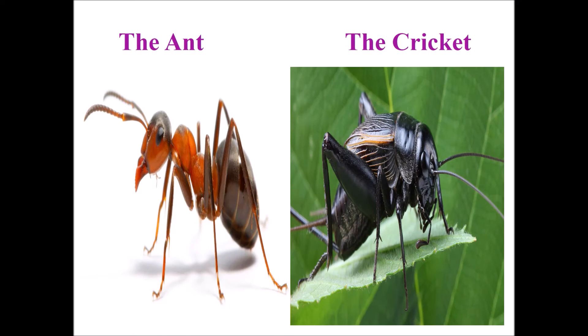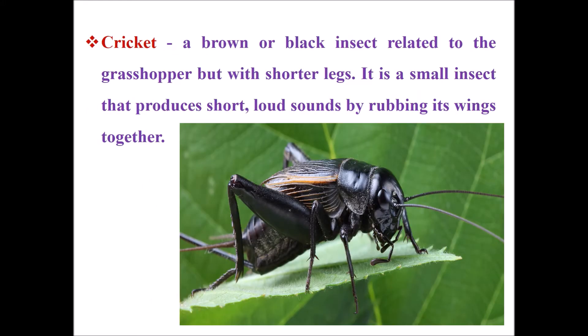The Ant and the Cricket. Students, here we can see the pictures of the ant and the cricket. Now let's know about the cricket. Cricket is a brown or black insect related to the grasshopper, but with shorter legs. It is a small insect that produces short, loud sounds by rubbing its wings together.